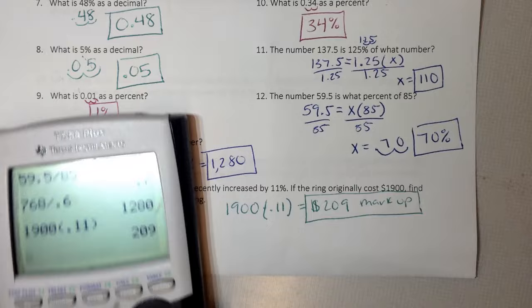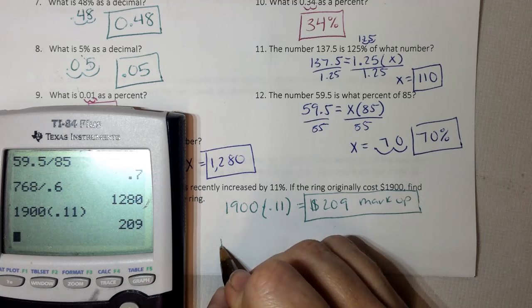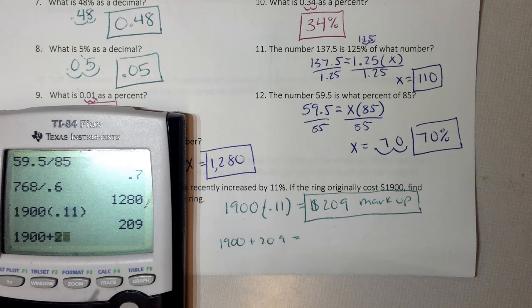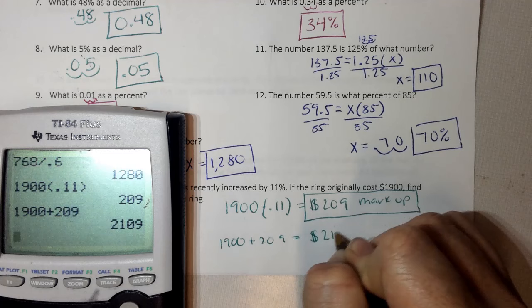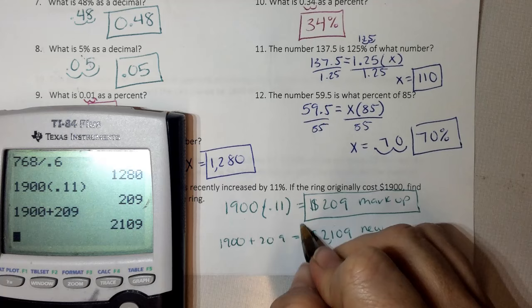So that is my markup or my increase. That's half my answer because it says find the markup and the new price. Well, to find my new price, I have to take my old price plus my markup. Now, if it's a discount here, I would subtract, but it said mark up. So my new price is $2,109. That's my new price. So there's my second answer.